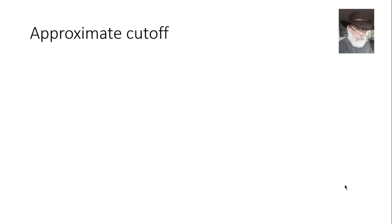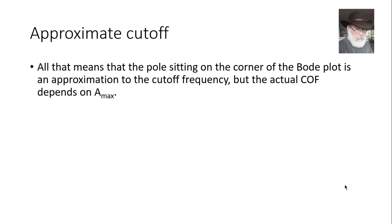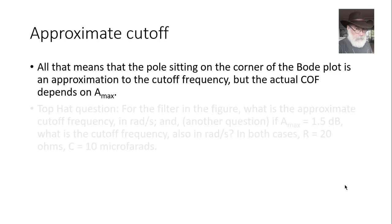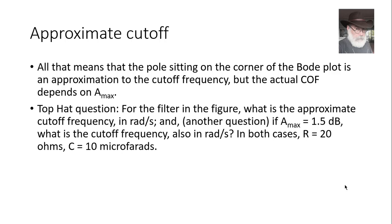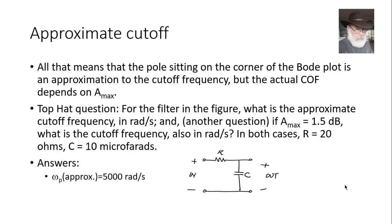Approximate cutoff: if no A_max is given, use the corner frequency as omega_p. But if A_max is given, intersect the bottom of A_max with the actual curve to find the exact omega_p. Here is a practice question: for the filter with R = 20 Ω and C = 10 μF, and A_max = 1.5 dB, what is omega_p? The approximate corner is 5000 radians per second, and the actual omega_p when A_max is 1.5 dB is 3211 radians per second. Work on that and check your answers.